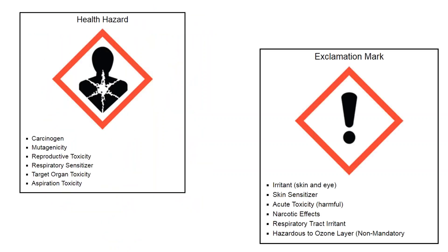The first pictogram is the Health Hazard. This involves hazards that affect any and all organs and may cause debilitating disease or death after exposure. Any time you see this symbol, closely research the SDS and prepare to train and equip your employees before they use the product. This covers carcinogens, mutagens, reproductive toxicity, respiratory sensitizers, target organ toxicity, and aspiration toxicity.